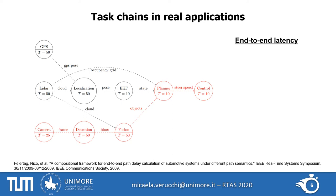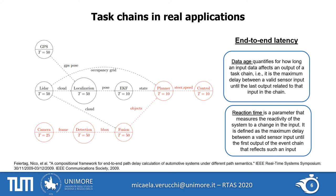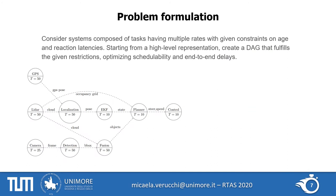The end-to-end latency of these task chains is very important. In particular, we can define two latencies: data age and reaction time. Data age measures how long a data can last from the moment it enters a chain to the last moment it affects the application. Reaction time, on the other hand, measures the latency from the moment a data enters the chain to the first moment it is reflected at its output.